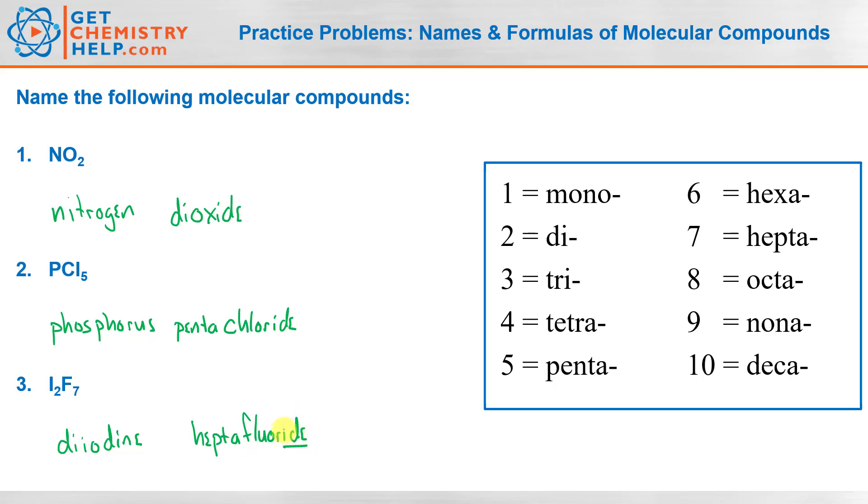Number four, Sb3Cl9. I want to point out quickly, Sb is antimony, which is technically a metalloid or a semi-metal, but again you can name metalloids or semi-metals the same way you can nonmetals. You can name these like molecular compounds. So three antimony, well that would be triantimony.